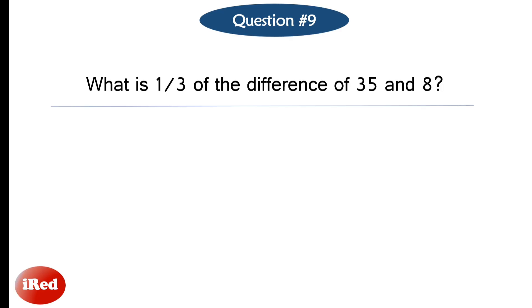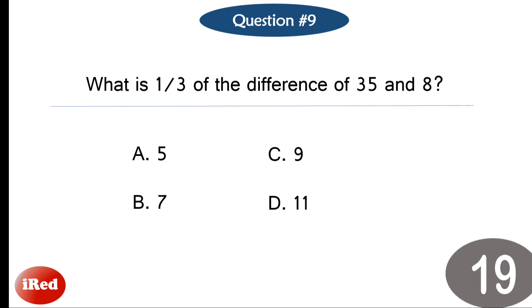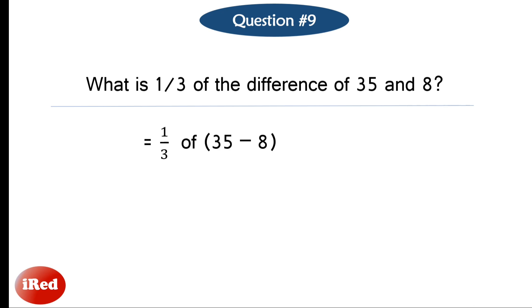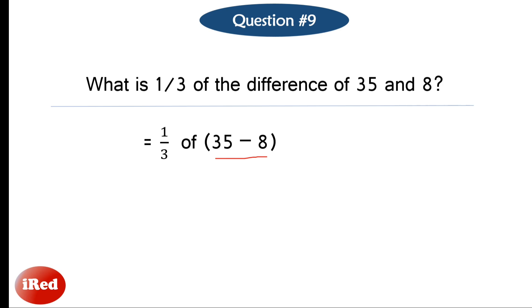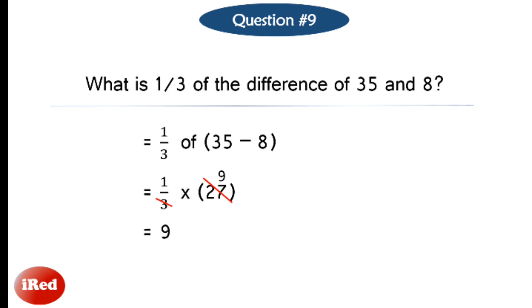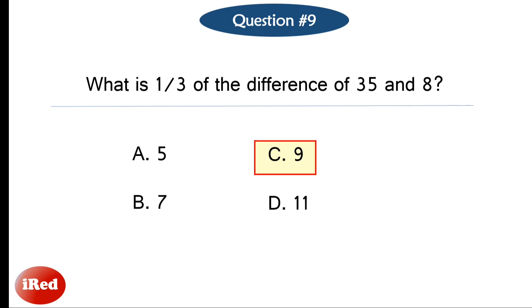Question 9: What is one-third of the difference of 35 and 8? 'Of' means multiplication. First, get the difference: 35 minus 8 equals 27. Then one-third times 27 equals 1 times 27 divided by 3, which equals 9. The correct answer for number 9 is letter C, 9.